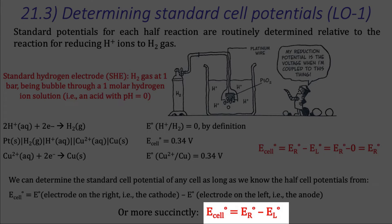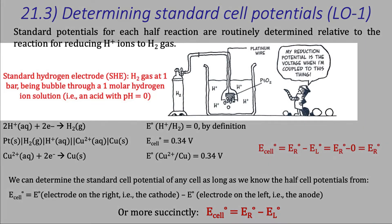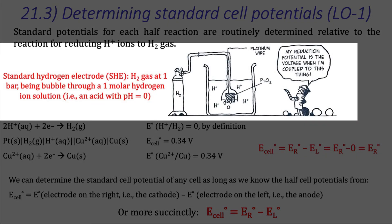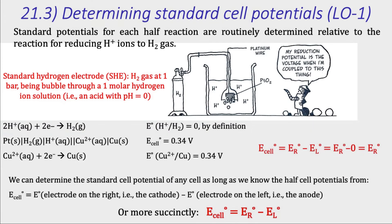But where do these standard half-cell potentials come from? Well, as illustrated here, they are determined by hooking each half-cell up to a common reference electrode called the standard hydrogen electrode, in which H2 gas at one bar is bubbled through a one-molar hydrogen ion solution, resulting in the half-cell reaction indicated here.